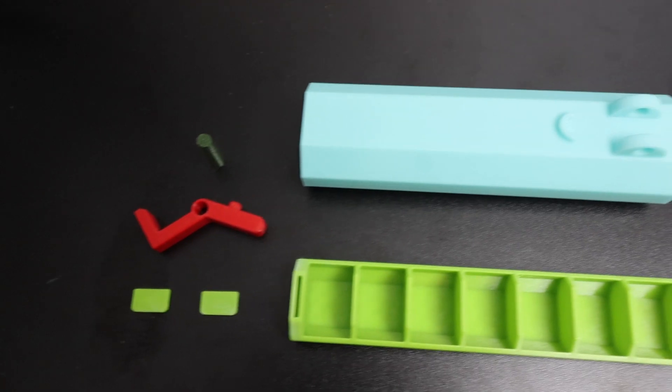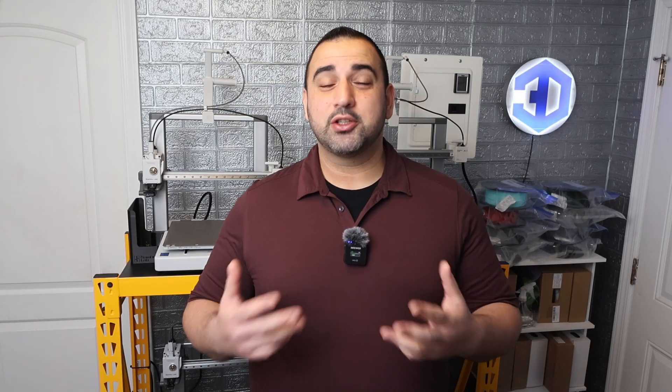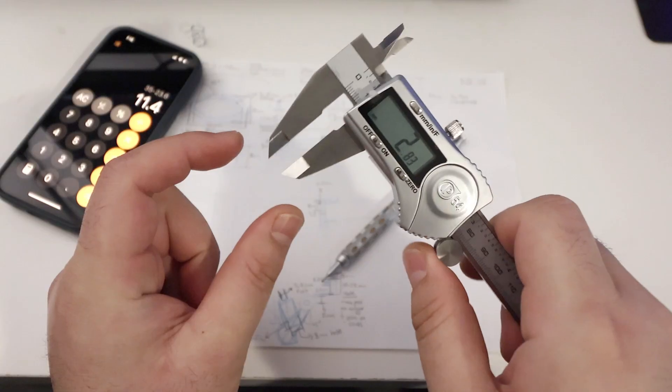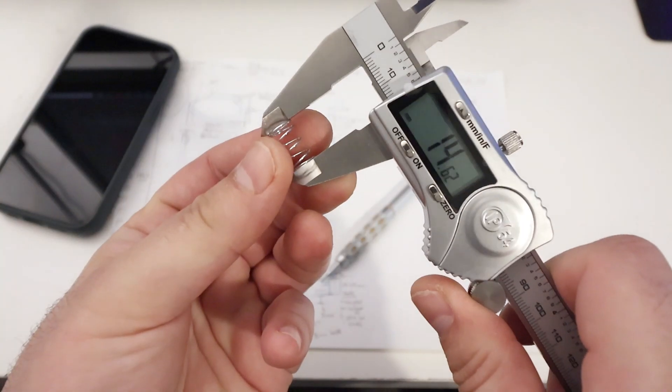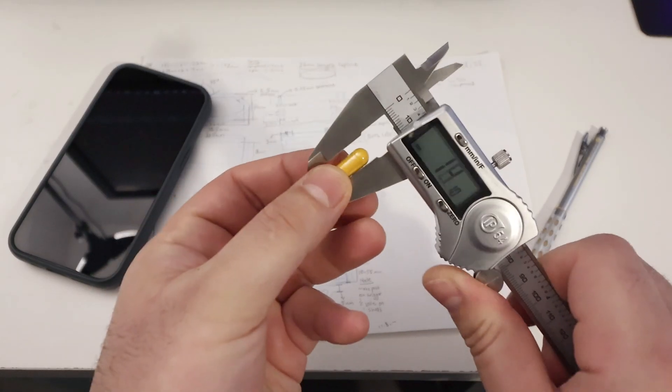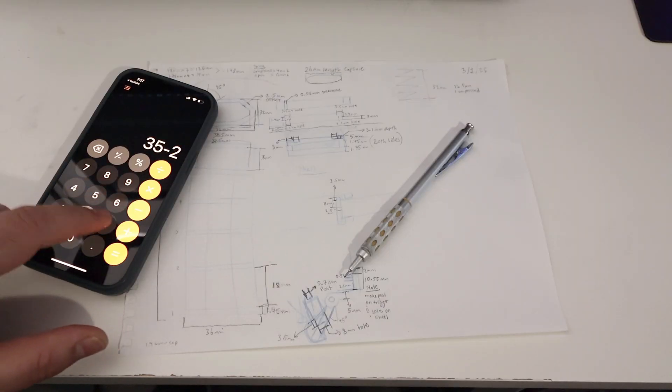I modeled, printed, and finally ended up with a prototype that actually worked the way I wanted. Before I even touched the software, I grabbed my mechanical pencil with blue lead and started sketching on paper. I laid out the front design, measuring everything in millimeters with calipers. The 7-day slot tray needed precise spacing, so I crunched the numbers with my calculator.